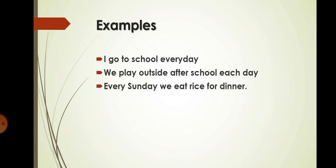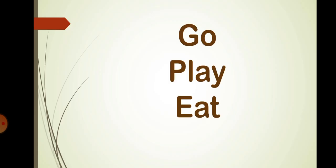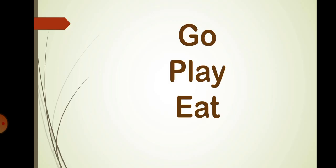Here I have just examples. Look at the first one and then listen to others. I go to school every day. We play outside of the school each day. And every Sunday, we eat rice for dinner. In these sentences, we can say that go, play and eat are examples of simple present tense for daily situations. They tell about things that happen repeatedly in the present.